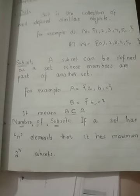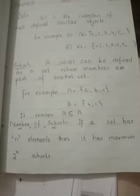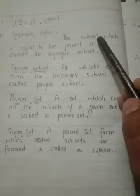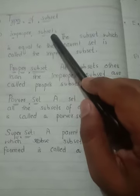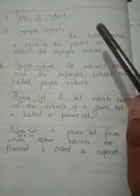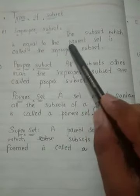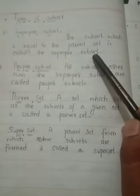Coming to the next topic, see you on the next page. The subset, our first type of set is improper subset. The subset which is equal to the parent set is called the improper subset.